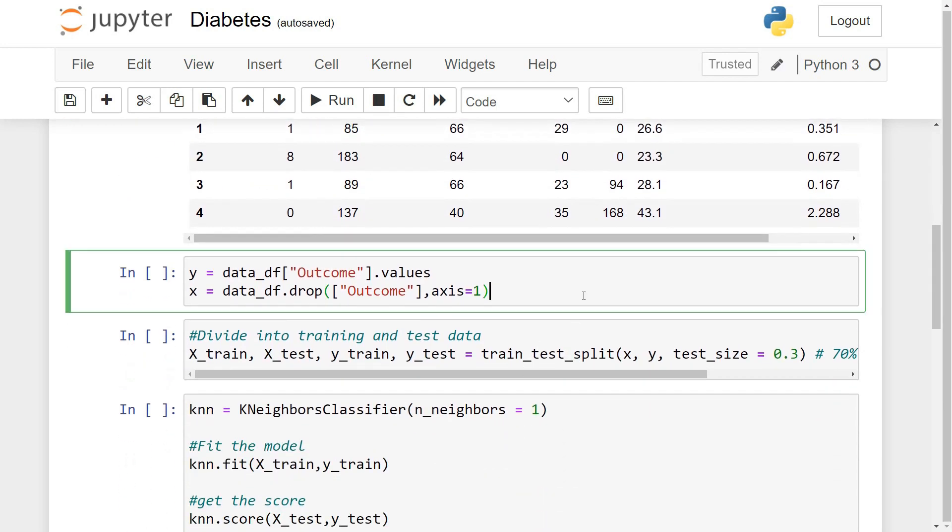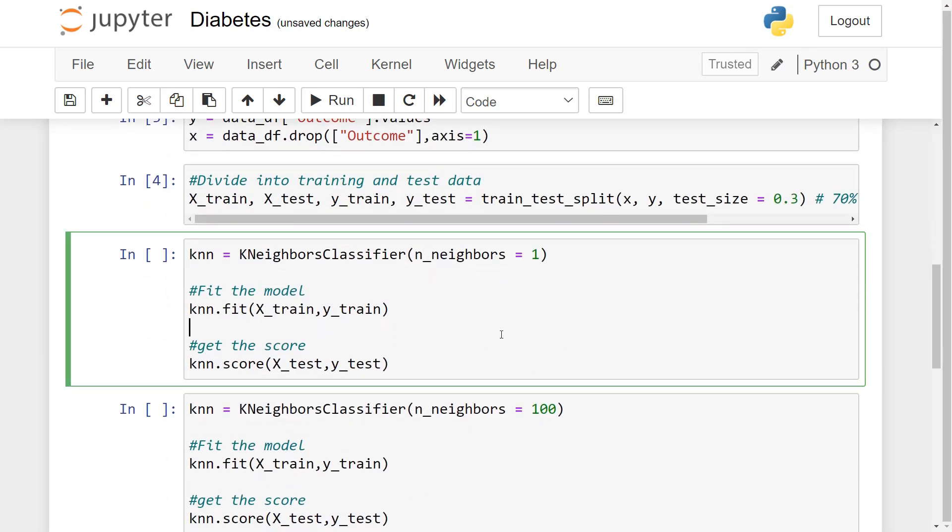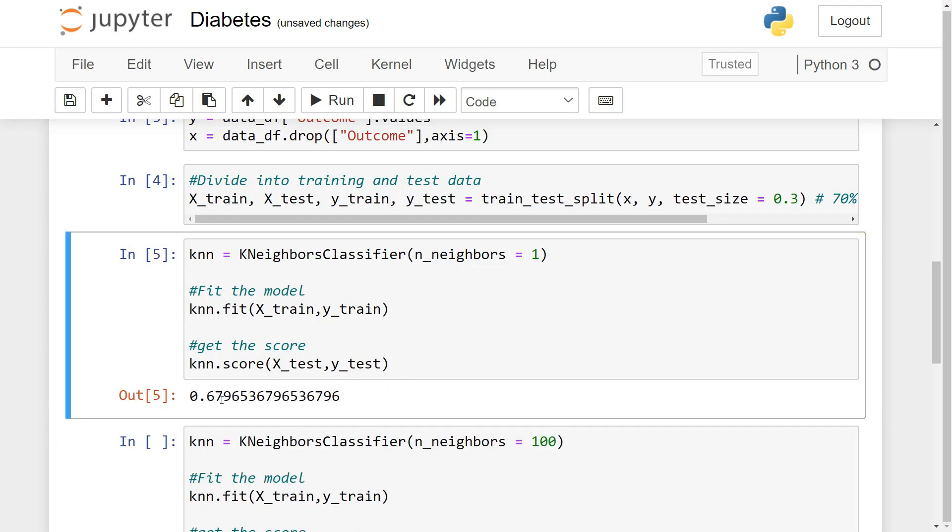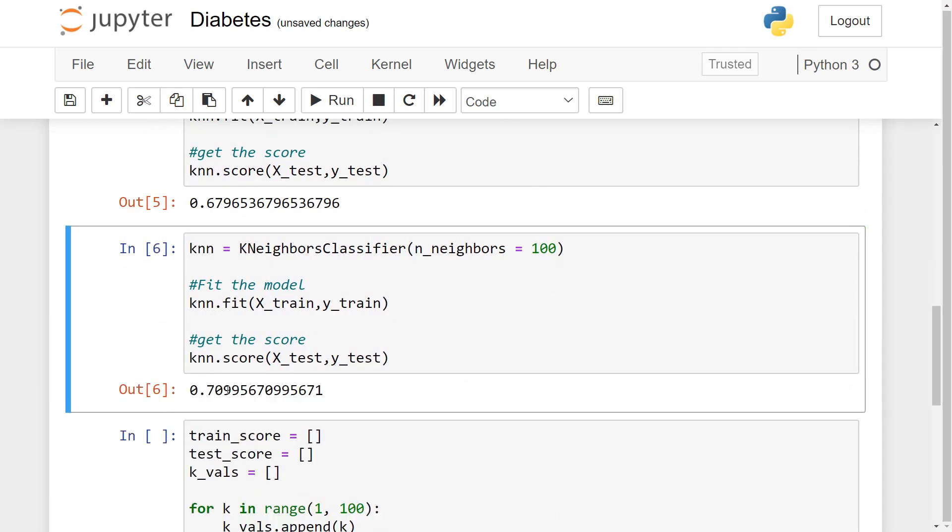And then we will assign the x and y values. Once we have that in place we will divide the dataset into training and test dataset. Alright so once we have completed all the above steps we can look into the score or the accuracy of the test dataset. So let's first give K equal to one and let's see how this model performs. So you can see that this is our score. So it's accuracy of 67 percent.